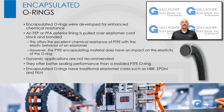Encapsulated O-rings were developed for enhanced chemical resistance. An FEP or PFA exterior lining is pulled over an elastomer cord stock and bonded to form a solid ring, offering the excellent chemical resistance of PTFE with the elastic behavior of an elastomer. It should be noted, though, that the Teflon encapsulating material does have an impact on the elasticity of the O-ring. Additionally, because encapsulated O-rings are vulcanized cord rings, dynamic applications are not recommended. In cases where an encapsulated O-ring gives the chemical resistance necessary but not the proper mechanical sealing characteristics required, an FFKM O-ring could be an option, although at a higher cost.